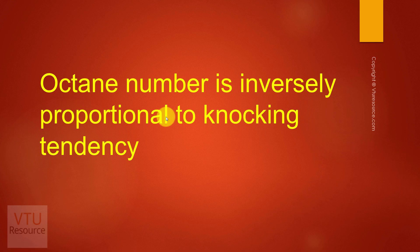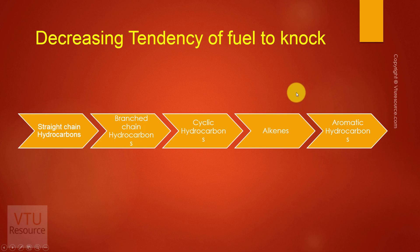Any petrol or gasoline available in the market does not contain only straight chain hydrocarbons — it also contains cyclic hydrocarbons, branched chain hydrocarbons, and aromatic hydrocarbons. The decreasing tendency of fuel to knock is as follows: straight chain hydrocarbons knock the most, followed by branched chain, then cyclic, then alkenes, and aromatic hydrocarbons knock the least.